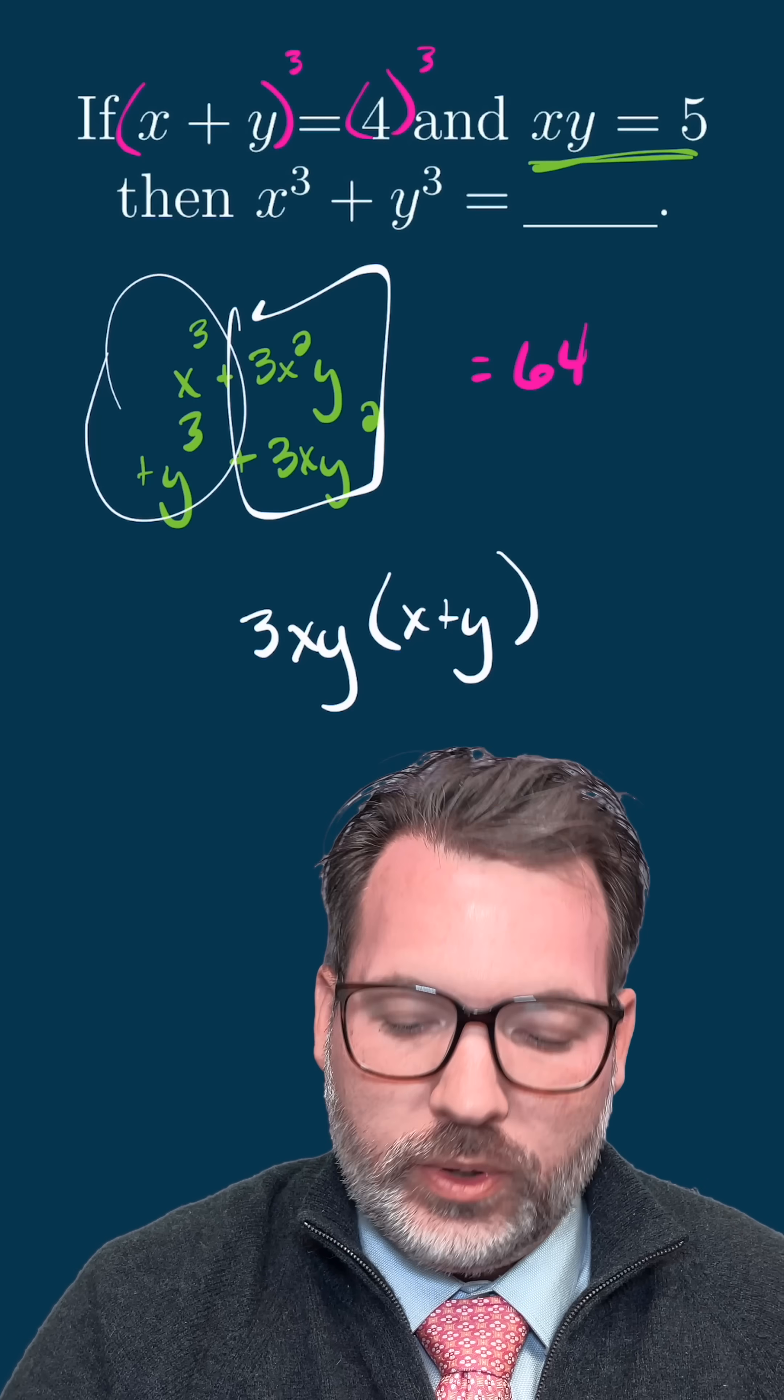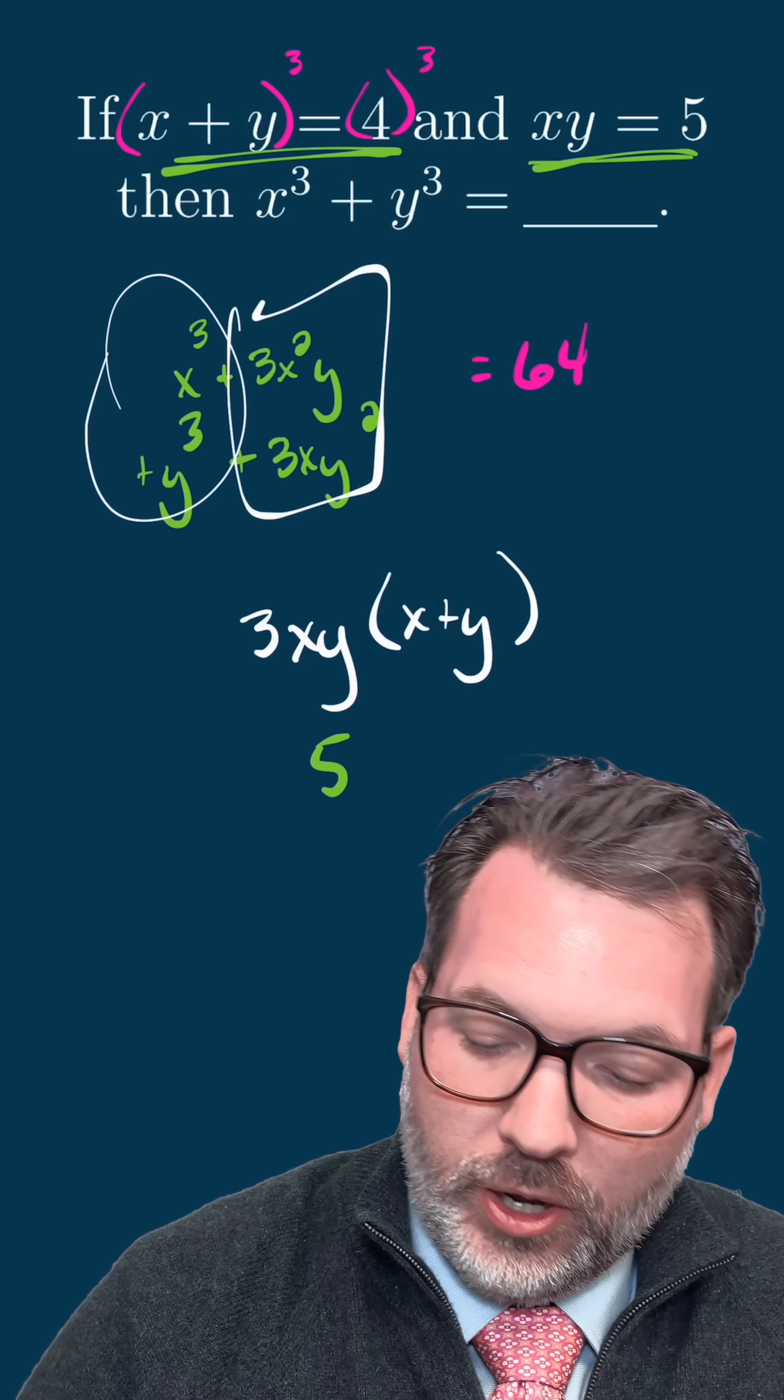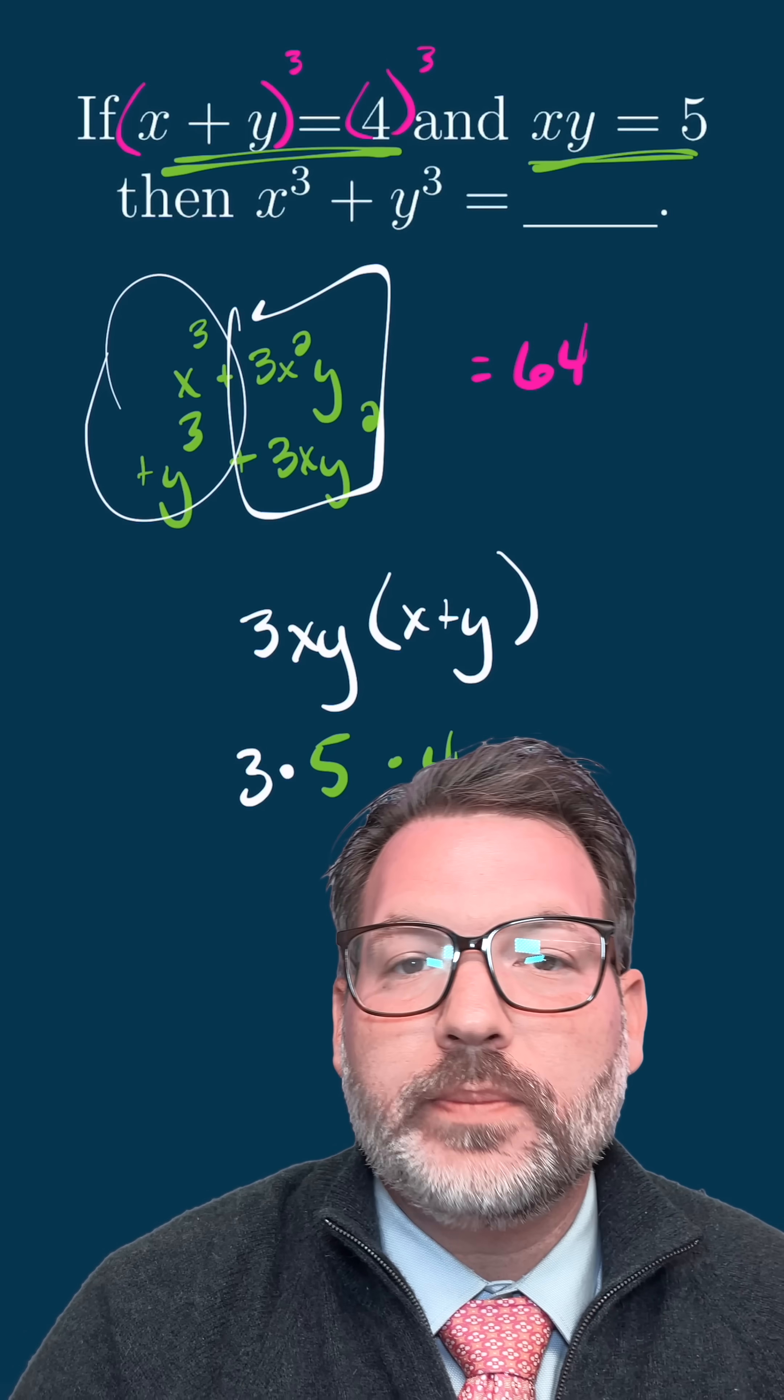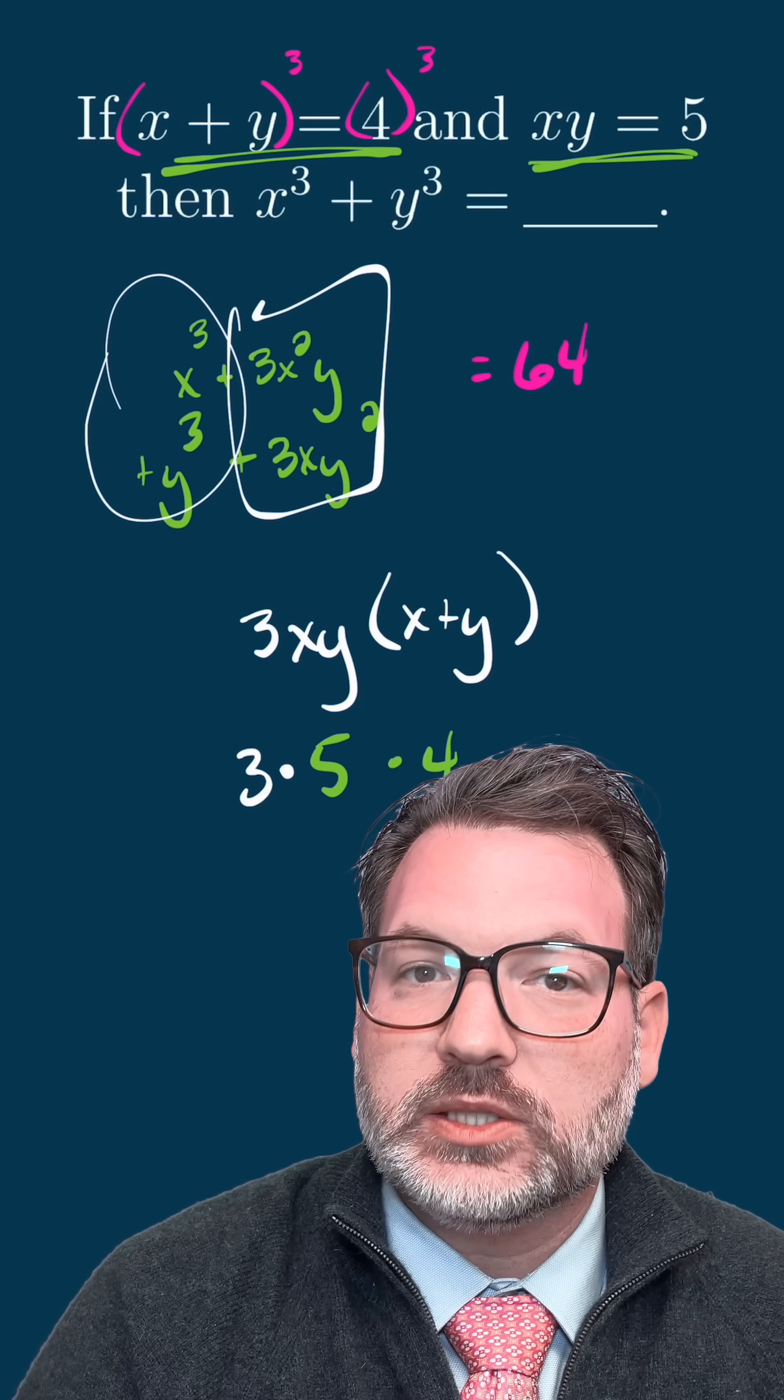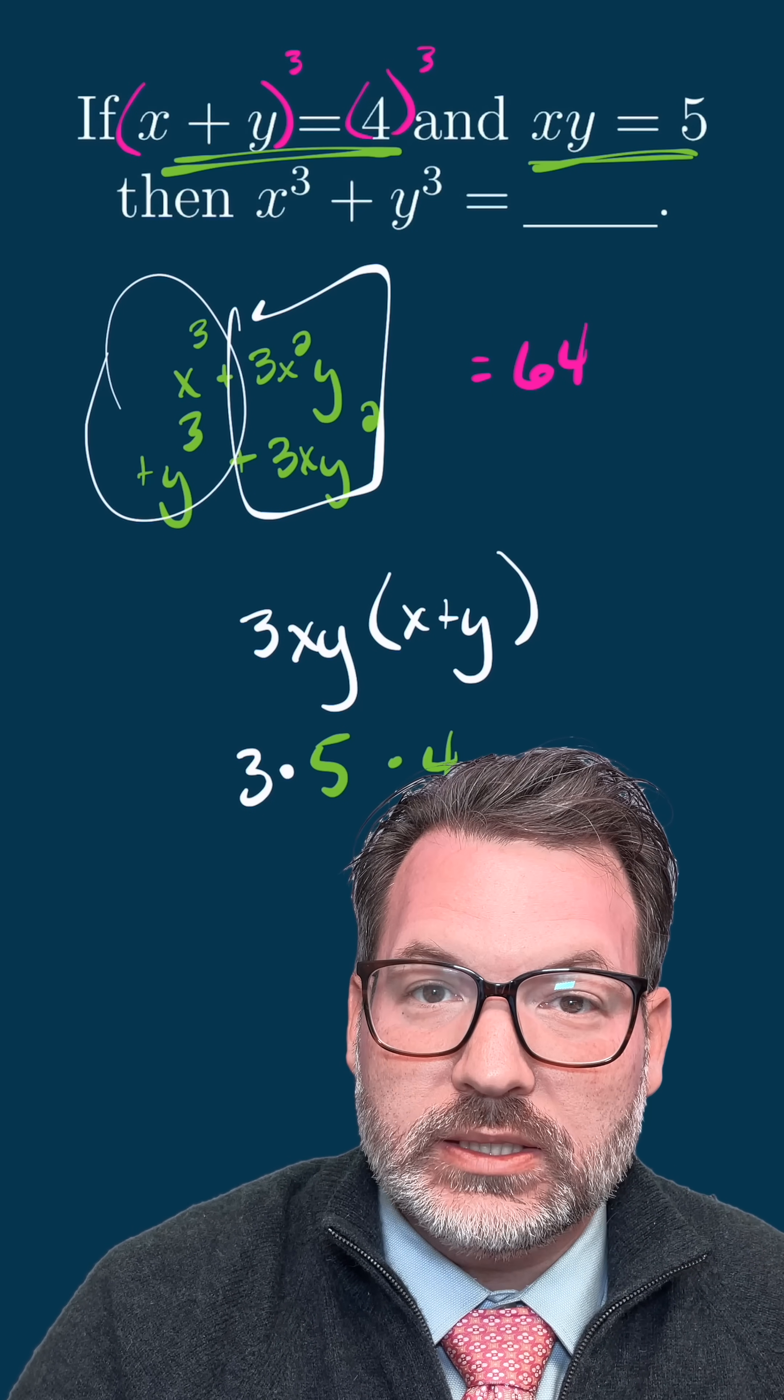But of course, x y, we know what that is, that's five. And for that matter, x plus y, we know what that is, that's four. So in fact, both of these terms, once we plug in for x y and x plus y, we can get back three times five times four makes 60.